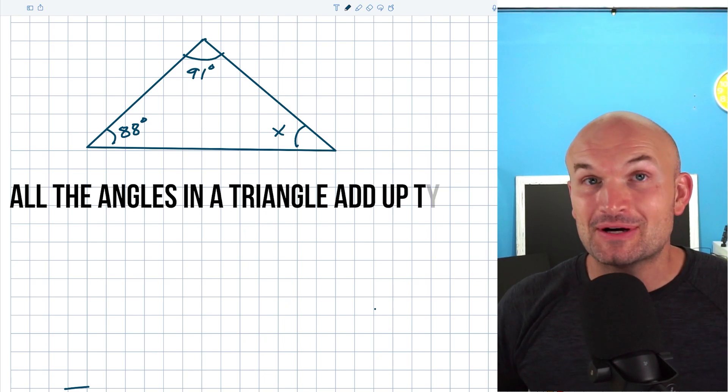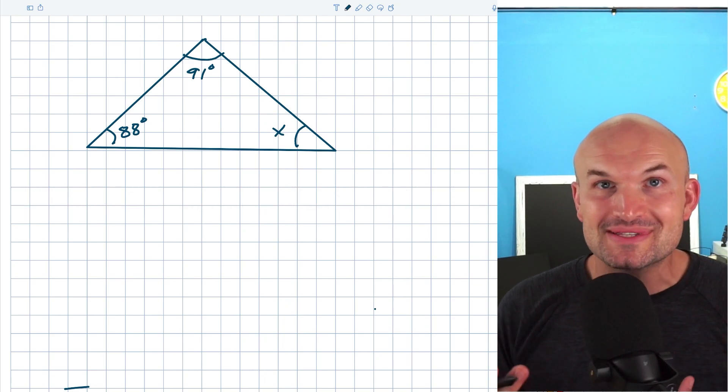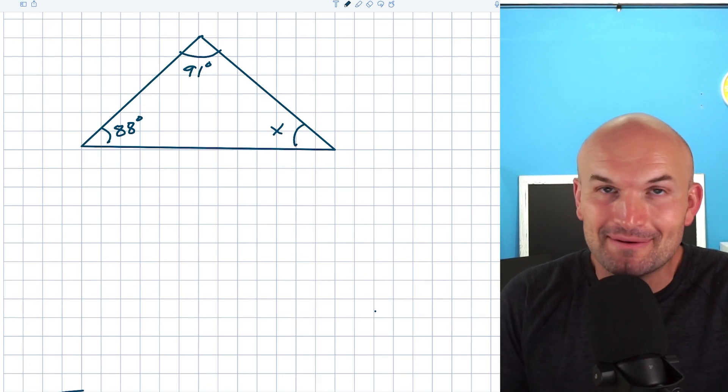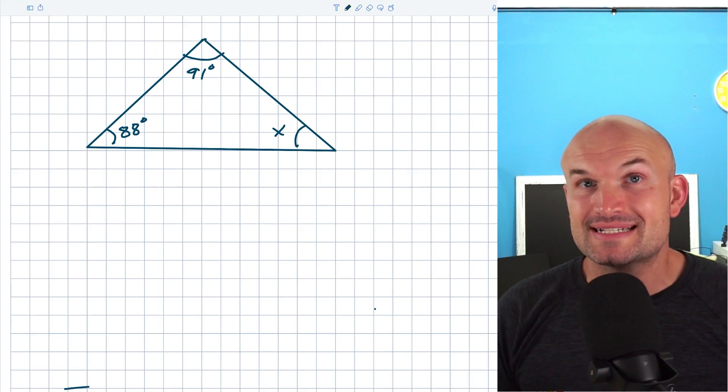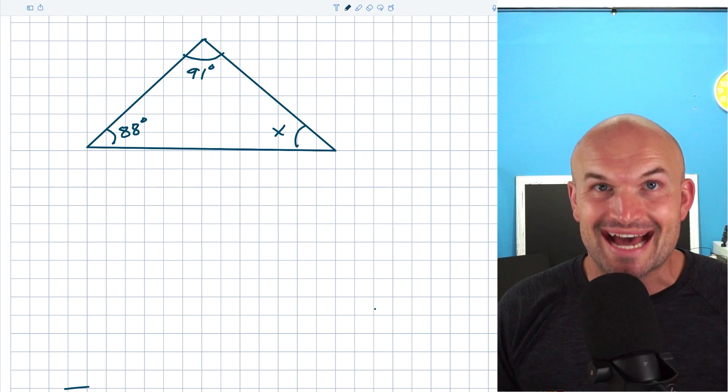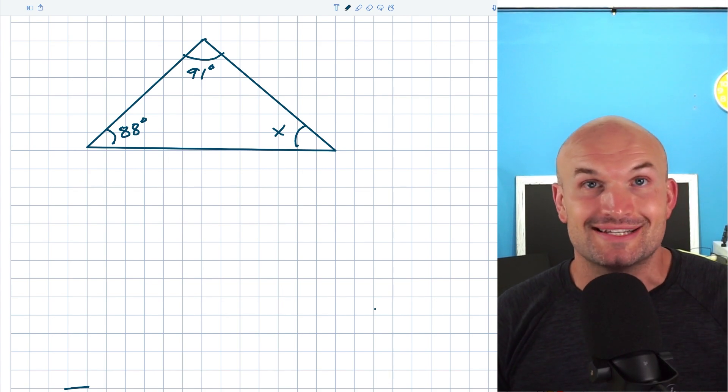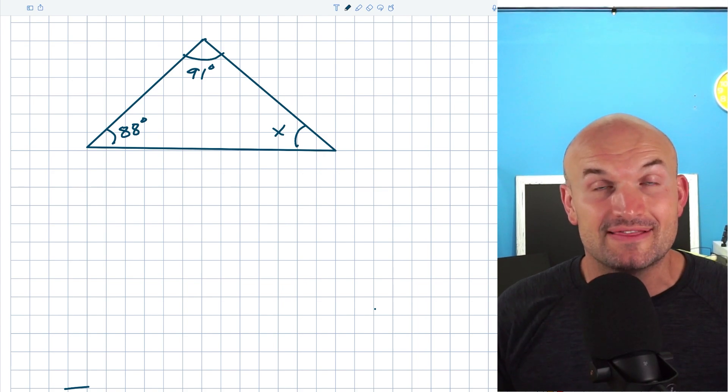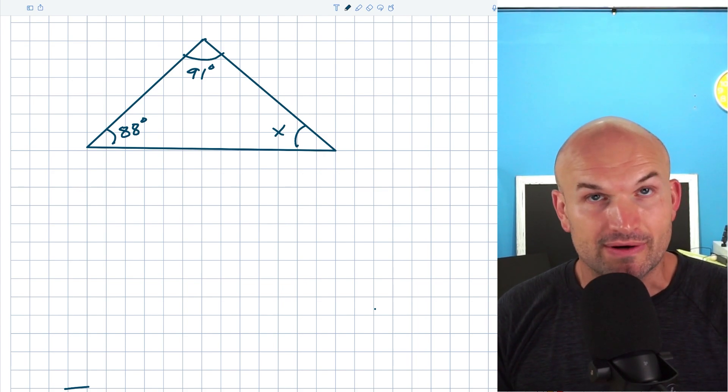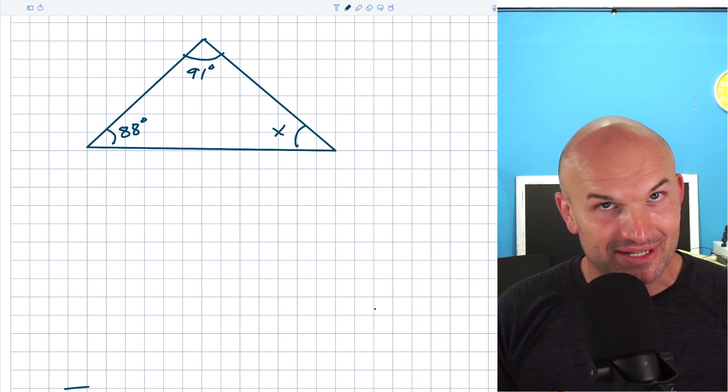Once you know all the angles in a triangle add up to 180 degrees, there are ways we can use that information to solve. This is an important video because I want to go over three examples that show up time and time again, not just in geometry class, but in later math classes. It's really important to recognize not just that all the angles add up to 180 degrees, which is the triangle angle sum theorem, but how can we use that to solve for X?